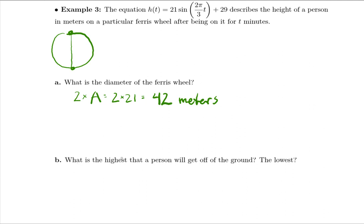In part B it says, what is the highest that a person will get off the ground? Well, presumably people's feet aren't dragging against the ground at the bottom, right? So it's up some, isn't it? And that's reflected in this 29. So what we know is that since 29 is the midline, right, that's exactly halfway between the lowest and the highest point. And then from the midline up to that highest point, we know must be 21 because that's the amplitude. So we can just take 29 meters plus the 21 meters, which gives me 50 meters off the ground.